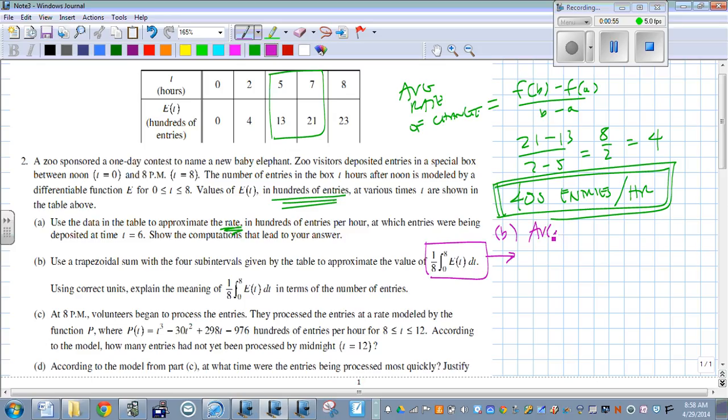This is the average value of f, or in this case, the average value of e. So average value, that's the average value of e(t). That's the function.